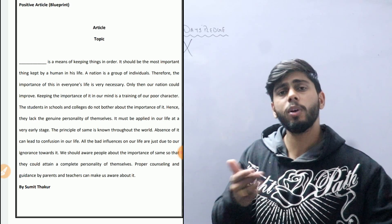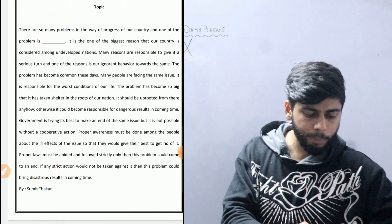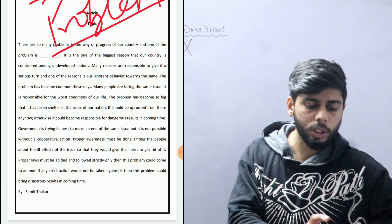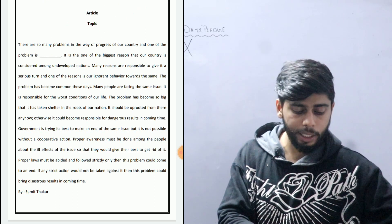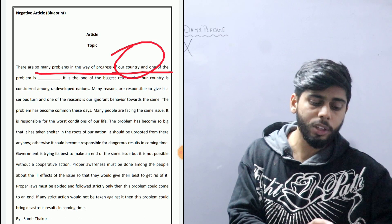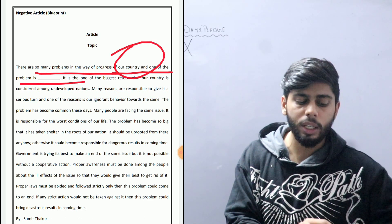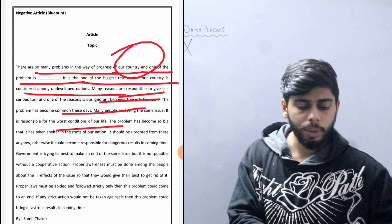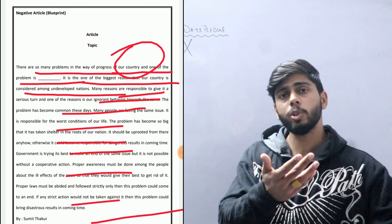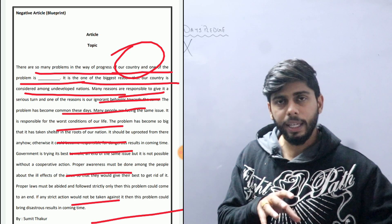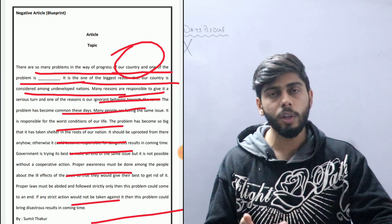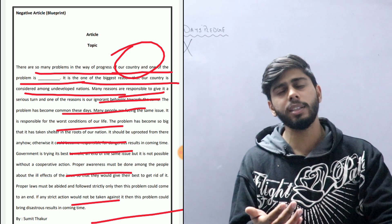This is the line-by-line explanation. For negative articles — pollution, global warming — there are some common lines you can use across all problems, like: 'There are so many problems in the way of progress of our country' and 'One of the problems is [your topic]' and 'It is one of the biggest reasons our country is considered underdeveloped.' You can modify this format and use self-composition in it. I hope the article topic and its format are now clear to you.